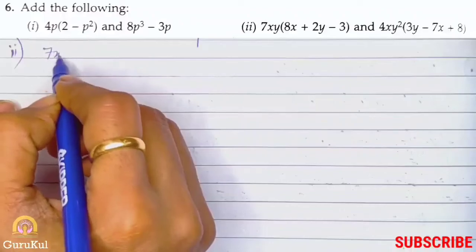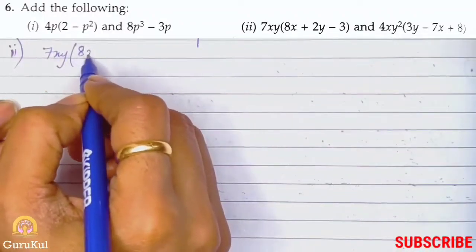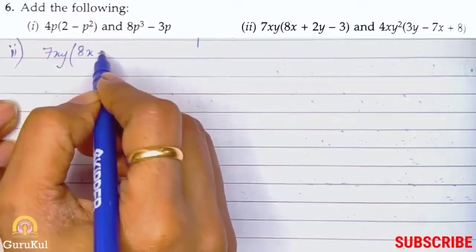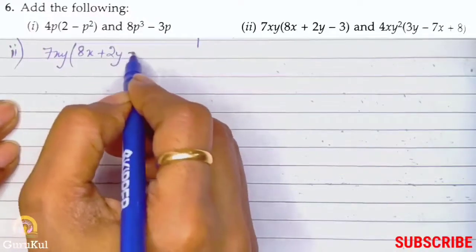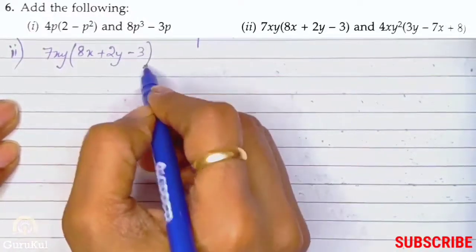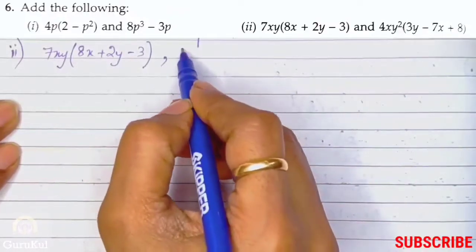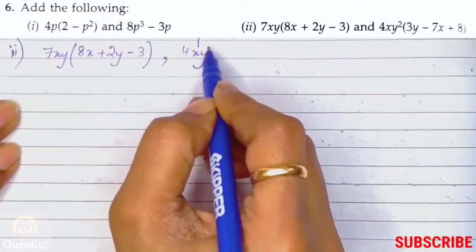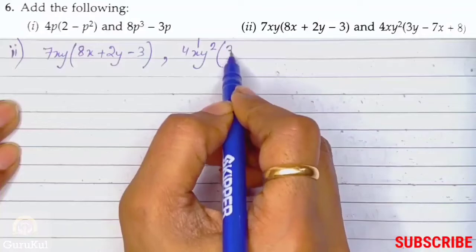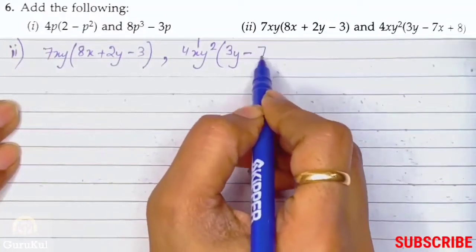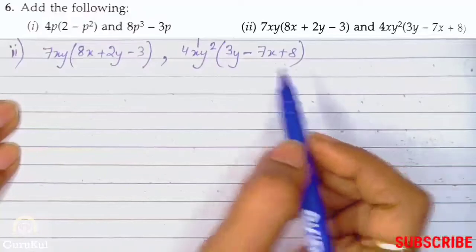7xy bracket (8x plus 2y minus 3) bracket closed. And the second expression is 4xy² bracket (3y minus 7x plus 8).